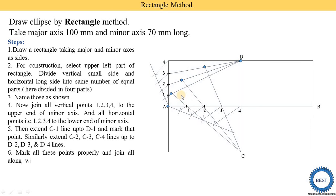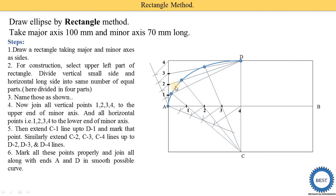Mark all these points properly and join them from A to D in a smooth curve. These three points are connected from A to D as smoothly as possible.